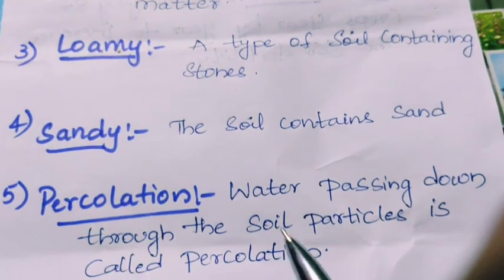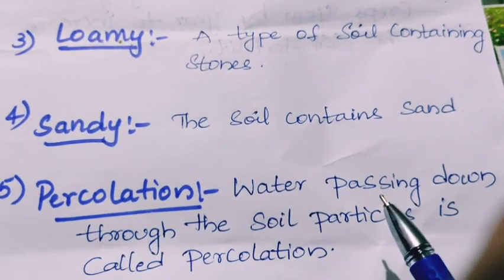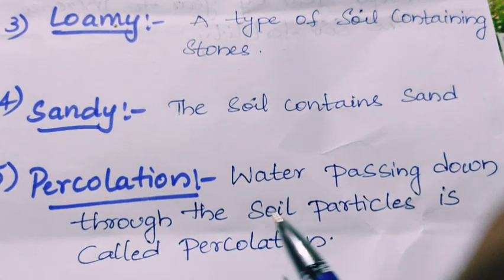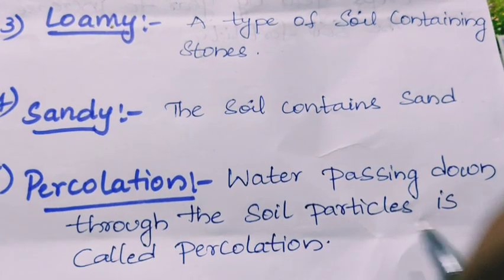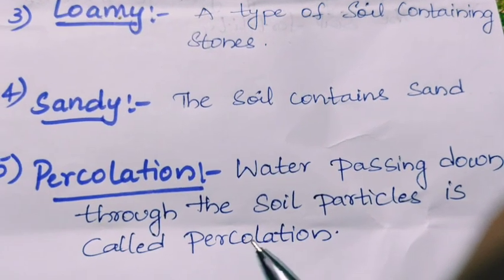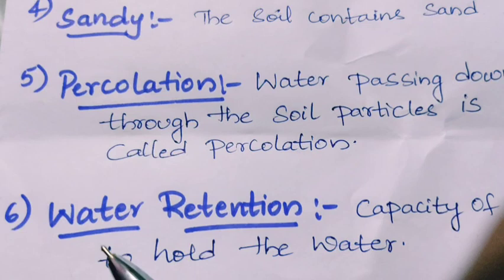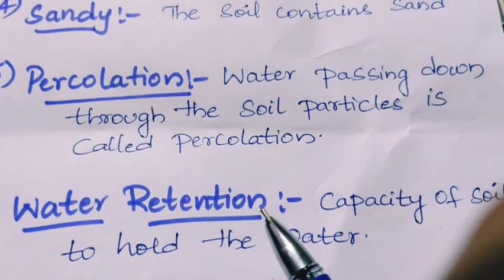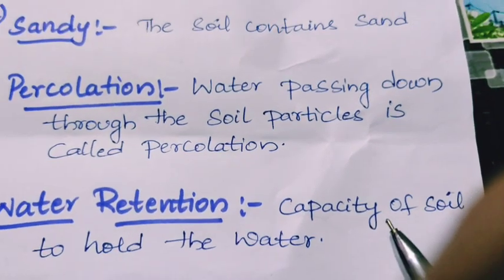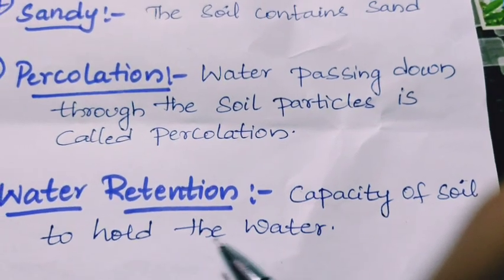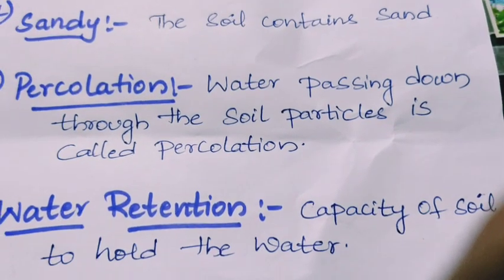Percolation: water passing down through the soil particles is called percolation. Water retention: the capacity of soil to hold the water.